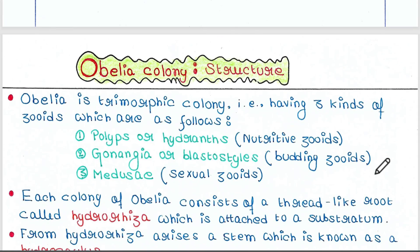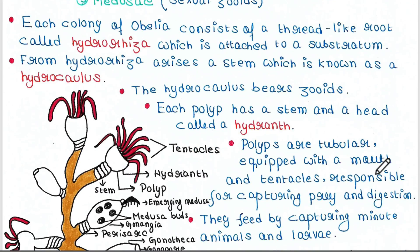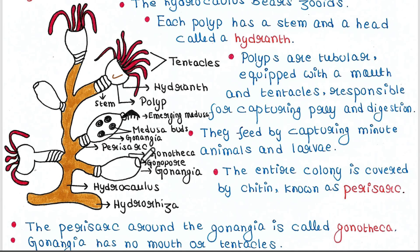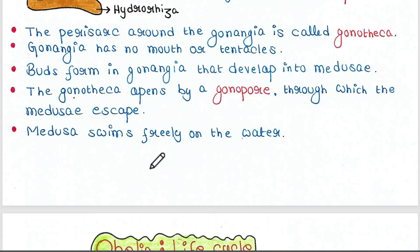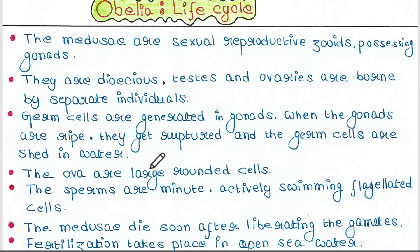So in our last lecture, we talked about the structure of the Obelia colony. We saw that three types of zooids or morphological forms are present in each Obelia colony: the polyp, the gonangia, and the Medusa. Today we will see the life cycle of Obelia.